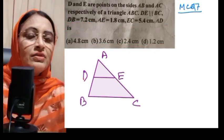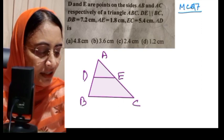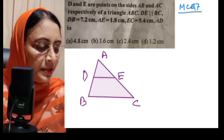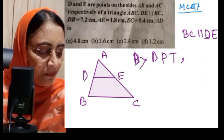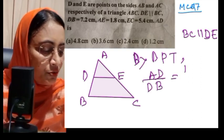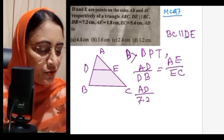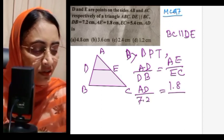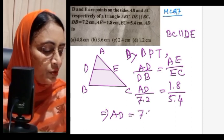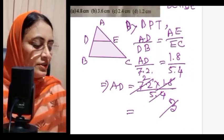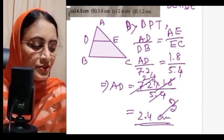Since BC is parallel to DE, by BPT: AD/DB equals AE/EC. Substituting: AE is 1.8, CE is 5.4, DB is 7.2. So AD/7.2 equals 1.8/5.4, which gives AD equals 7.2 times 1.8 divided by 5.4, equals 2.4 cm. The answer is option C.